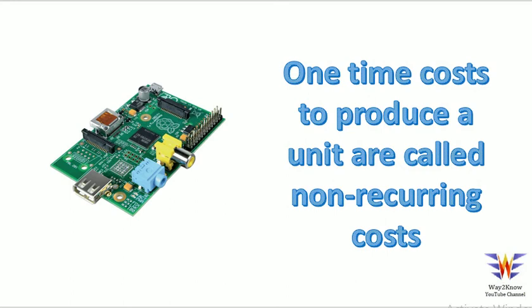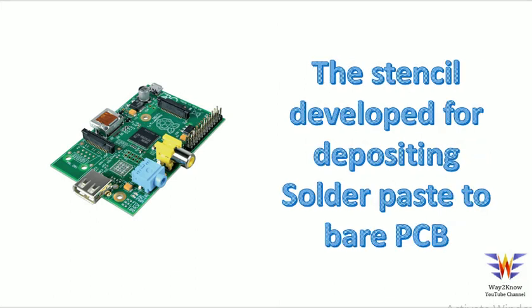One-time costs to produce a unit are called non-recurring costs. For example, the board you see on the left, which is a Raspberry Pi initial version — to produce this unit there will be some costs which are associated and they cost only once. If you produce 10 boards, some parts require investment only for one board and the same thing can be used across all 10 boards. Such one-time costs are called non-recurring costs.